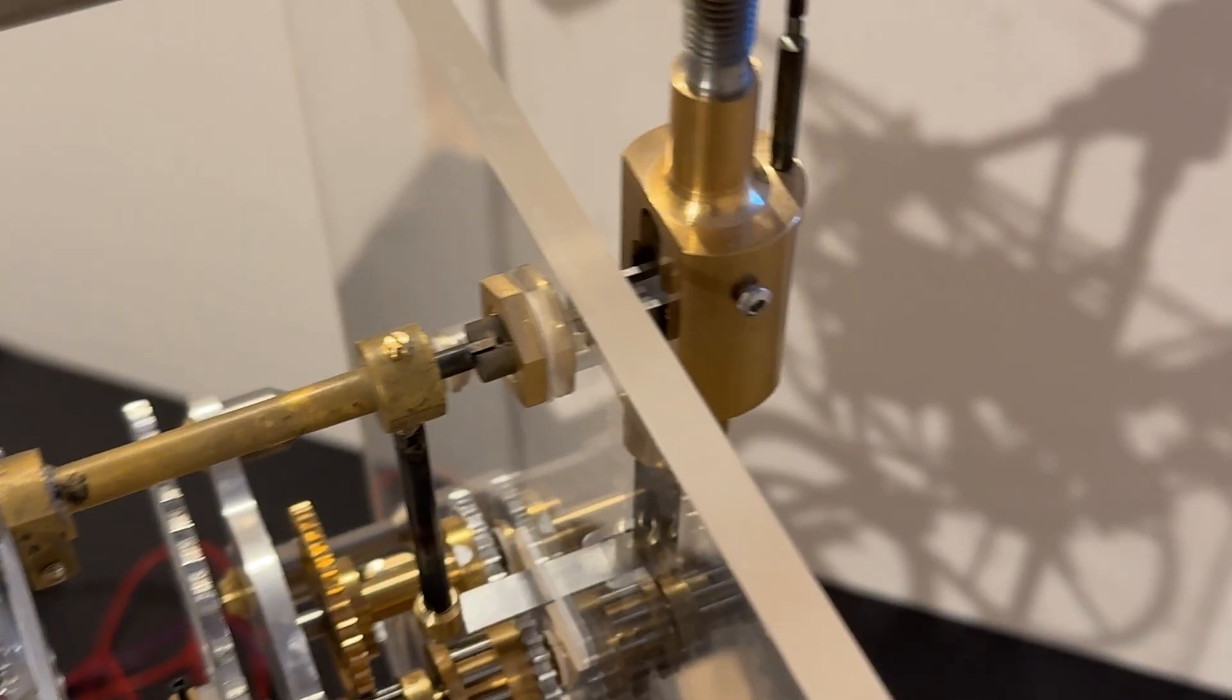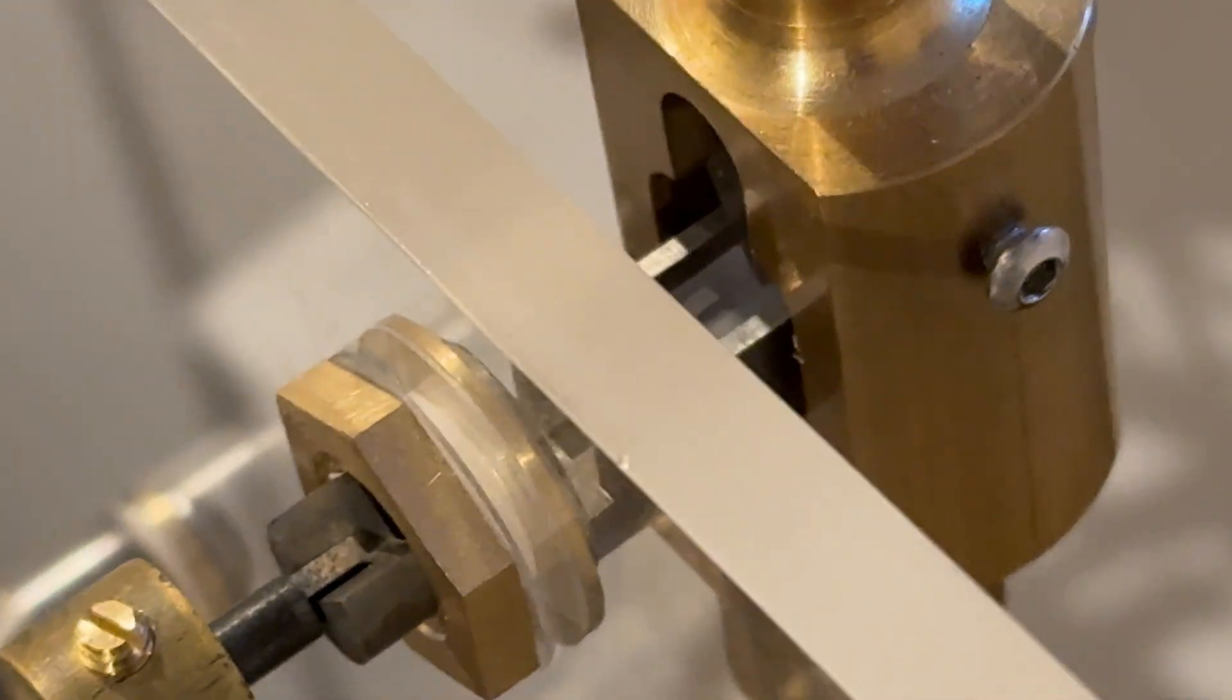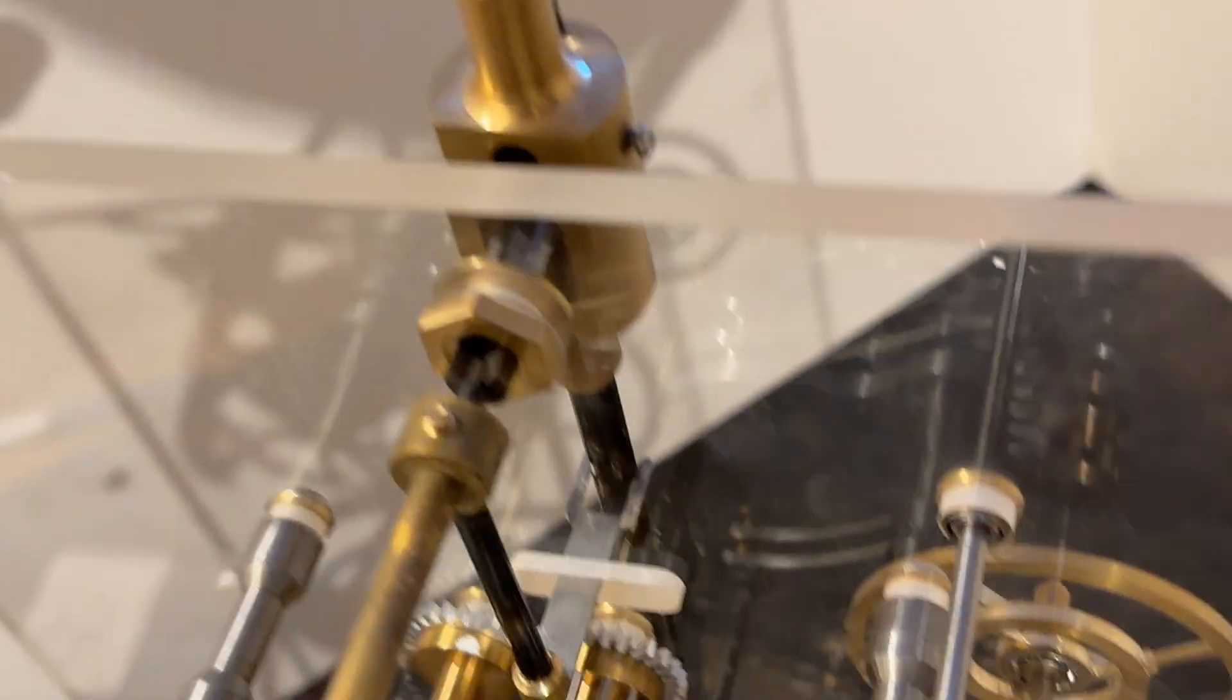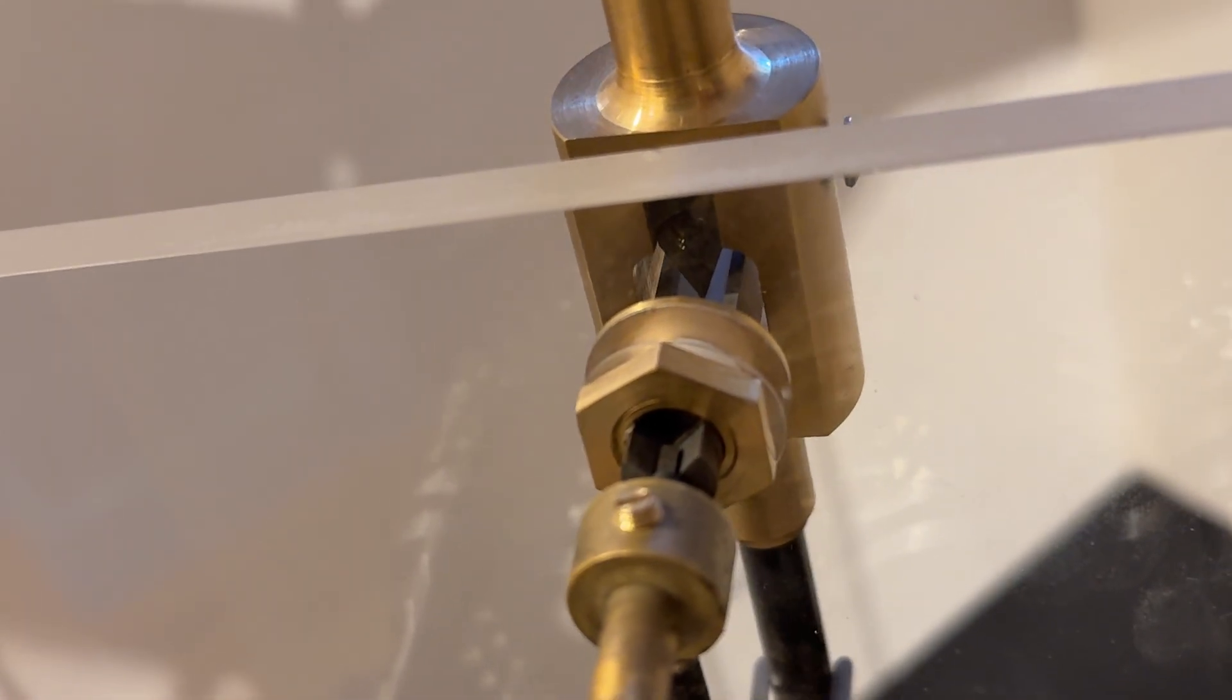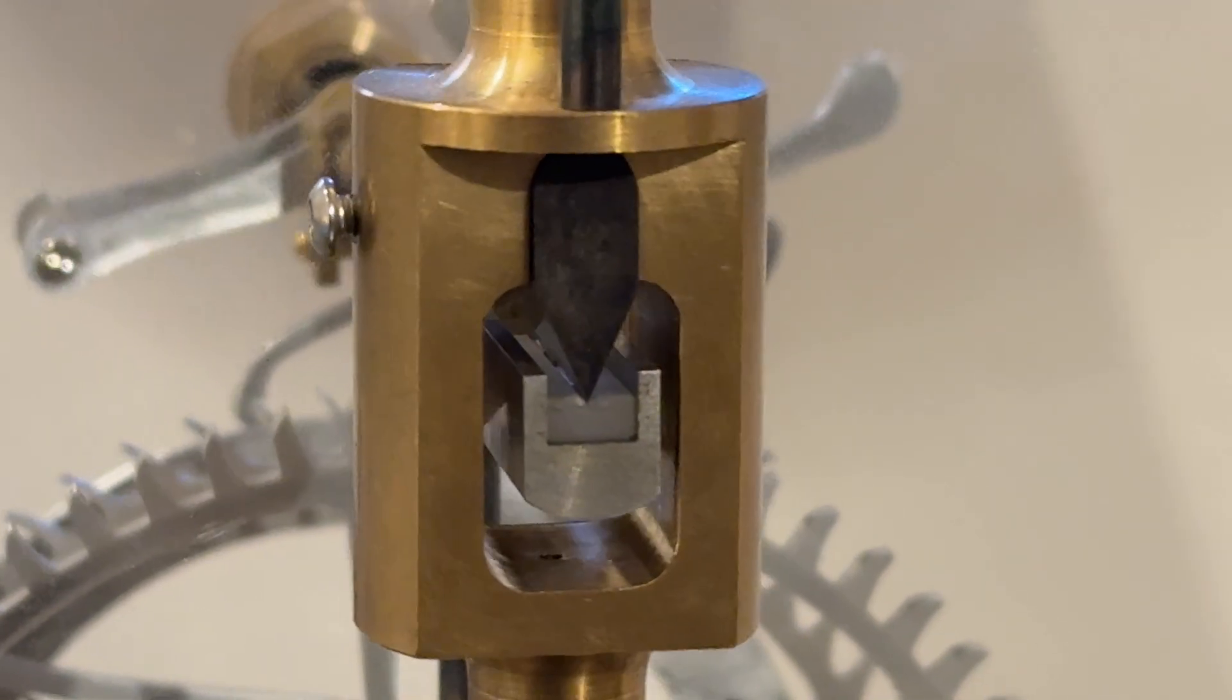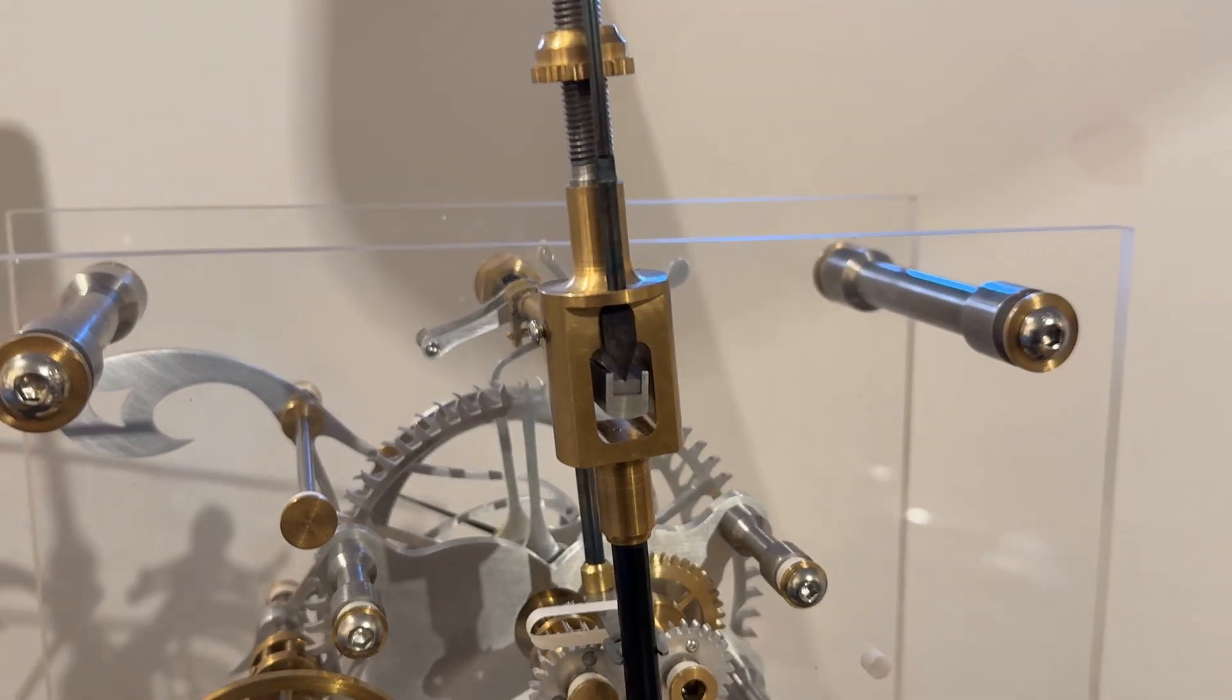So these close-up shots were designed to show the knife edge suspensions of both the pendulum and the grasshopper escapement. Here you can see the hardened knife edge operating on a sapphire bearing with a v-groove in it.